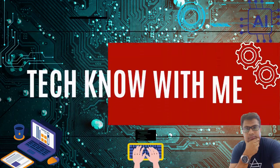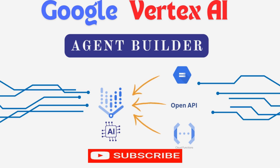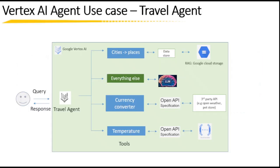Welcome to Techno with me. Let's understand Vertex AI Agent Builder. We are going to build one travel agent and then understand different tool technologies — web search, function, and Open API.